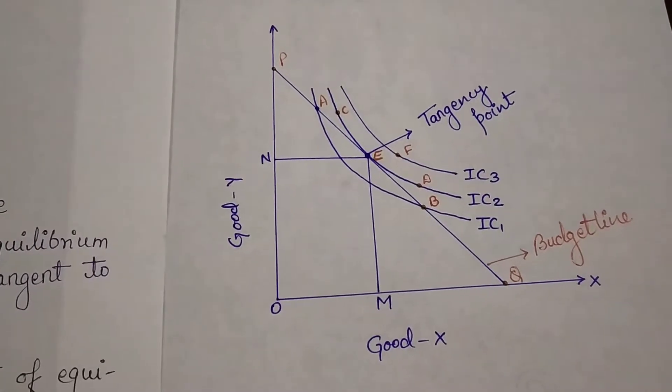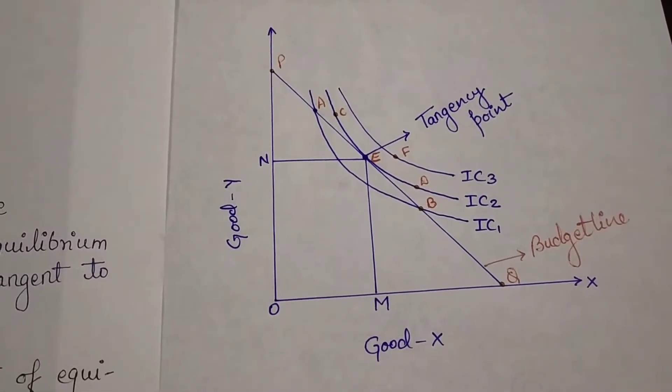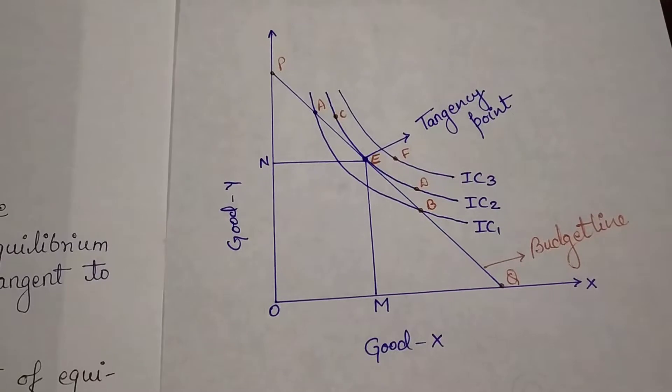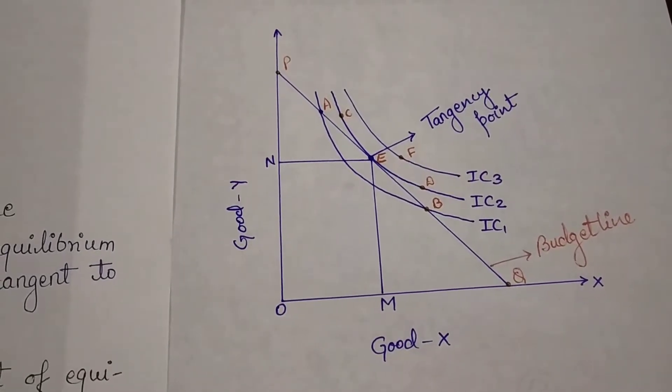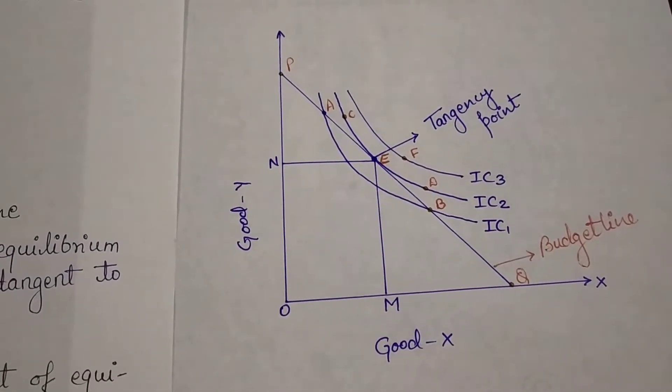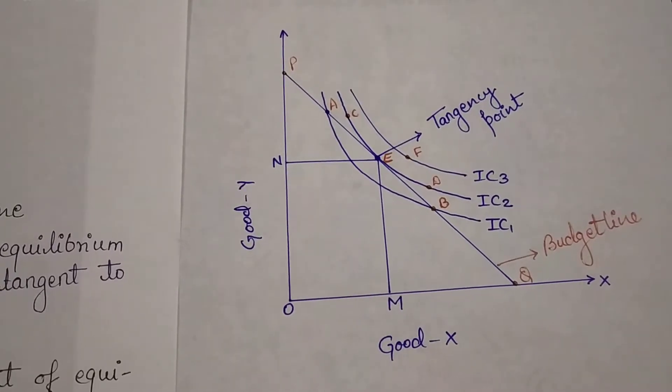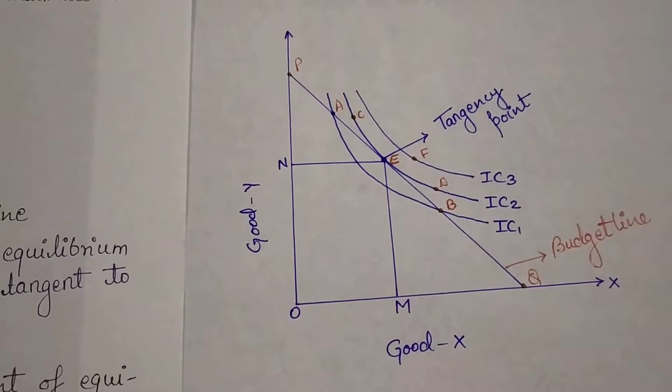And the line PQ is the budget line. Look here, I have drawn three ICs: first, second, third - IC1, IC2, IC3. We are going to discuss about each IC one by one. So first we will discuss about IC1.